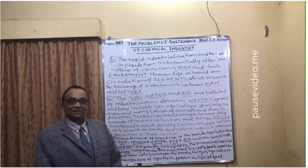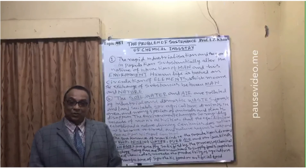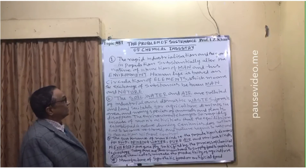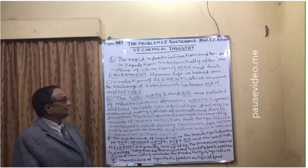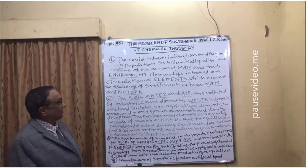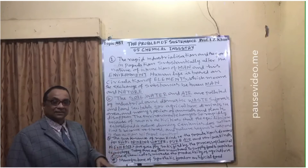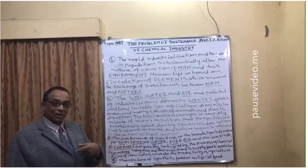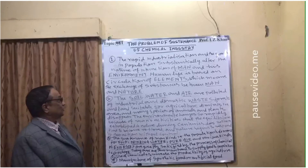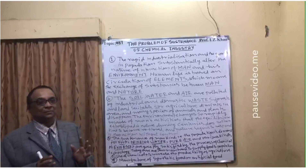Population substantially alters the nature of interaction between man and his environment. Human life is based on the circulation of elements — water, energy, food, carbohydrates, protein, fat — they are all in circulation in the form of elements, meaning the exchange of substances between man and nature. There must be an equilibrium between man and nature.